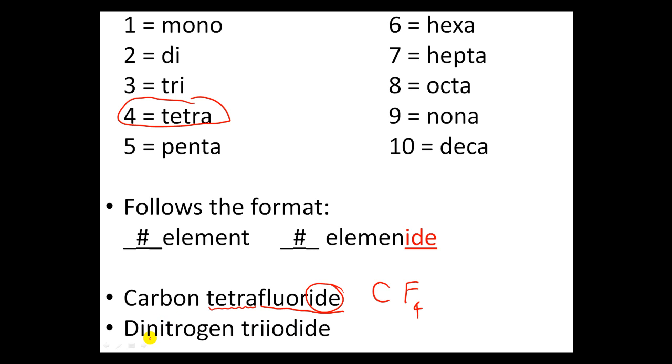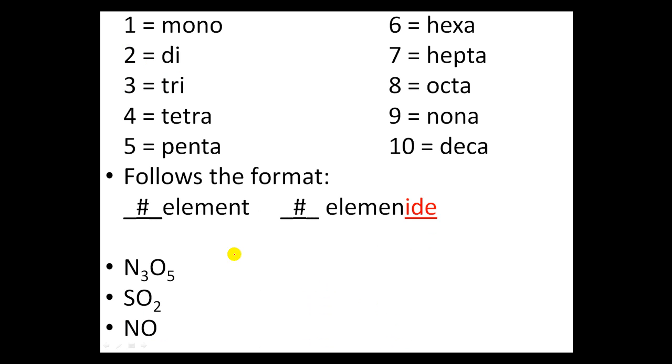Next one, dinitrogen triiodide. I see the word nitrogen here, so I write down nitrogen. I see the element iodide. It used to be called iodine, so I write down I for its symbol. Now how many nitrogens? Two, because it says di. So I write down N2. Next it says tri, and tri stands for three. So I need to write a three over here. Dinitrogen triiodide.